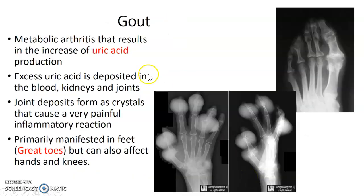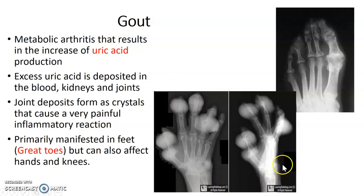Gout is an increase in uric acid production. Most often you'll do foot x-rays for gout, but you may also do a hand — though the hand shown here is an extremely severe case. It's usually found in the great toe but can affect hands and knees. The joint deposits form in the form of crystals and are very painful. Circle 'uric acid' for gout.